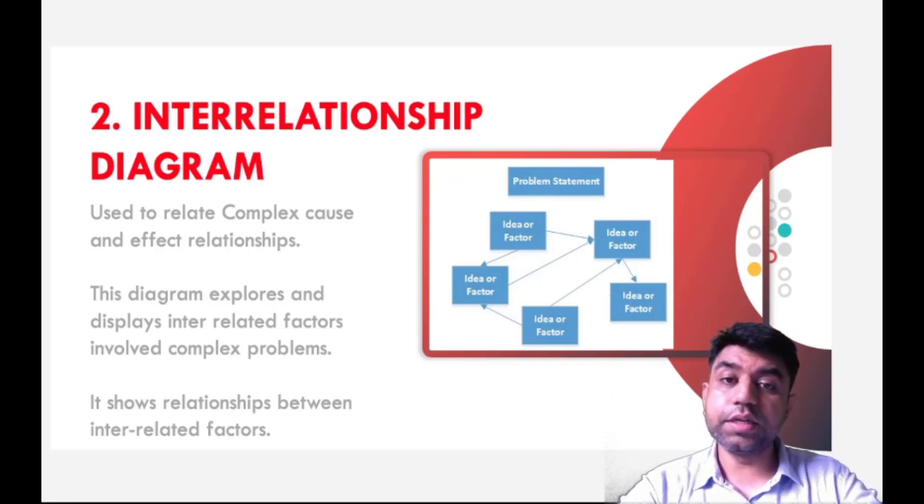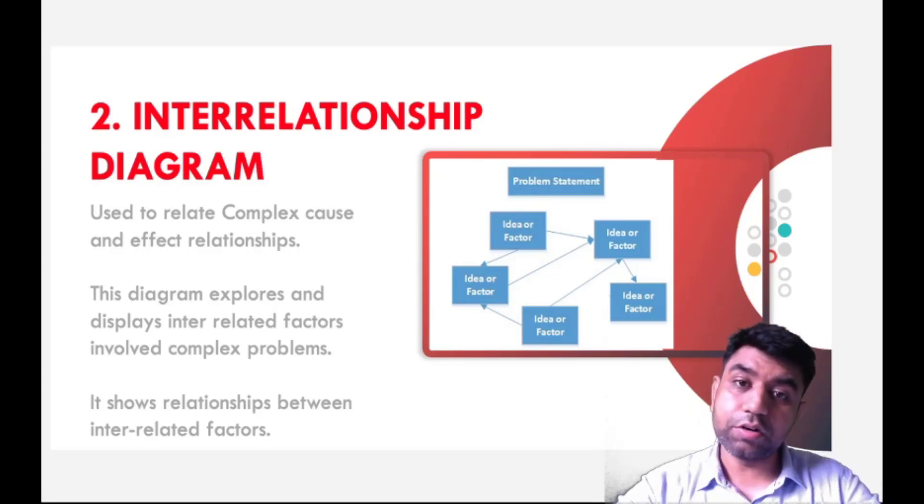The next one is the interrelationship diagram. From the name itself, we will get the idea what we are talking about. If there is some problem, one specific problem, and there are number of different reasons behind that problem. But those different reasons are also connected some of the time. That is nothing but it is an interrelationship. If you improvise one thing, second thing may get automatically improvised. You need to find out the interrelationship. It is used to find out or relate complex cause and effect relationships. This diagram explores and displays interrelated factors involved in complex problems. It shows interrelationship between interrelated factors. The diagram appears like this: problem statement written at the top, and the related factors will be represented like this.